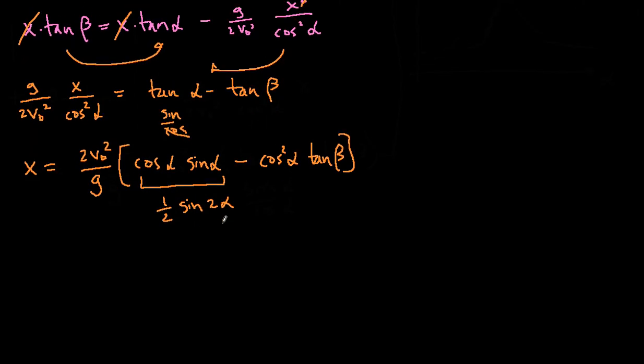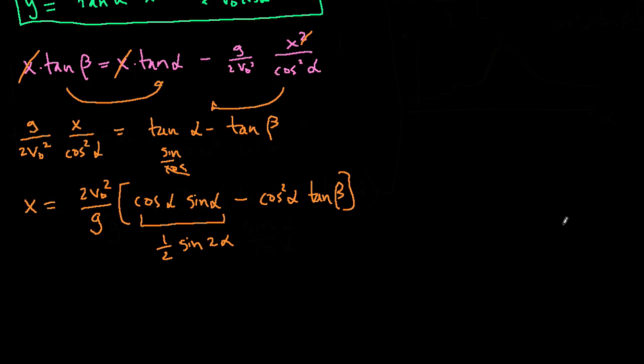So now, let me actually just pause there for a second, and let's discuss this. This is telling us what the x value is when the ball hits the hill as a function of the angle of the hill and the angle that you throw the ball off and the velocity with which you launch the ball. So clearly, the faster you launch it, the further it goes. That makes sense.